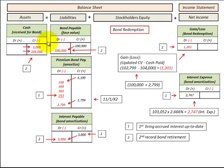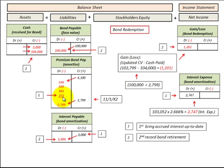Here are the journal entries for this bond redemption. Asset and liability accounts are shown on the balance sheet, and interest expense and any gain or loss are shown on the income statement. To bring accrued interest up to date: debit premium to bonds payable $253, debit interest expense $2,747, and credit interest payable $3,000.